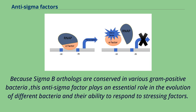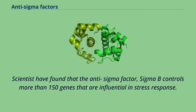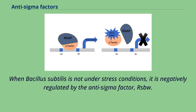Because Sigma B orthologues are conserved in various gram-positive bacteria, this anti-sigma factor plays an essential role in the evolution of different bacteria and their ability to respond to stressing factors. Scientists have found that the anti-sigma factor Sigma B controls more than 150 genes that are influential in stress response. When Bacillus subtilis is not under stress conditions, it is negatively regulated by the anti-sigma factor RSBW.